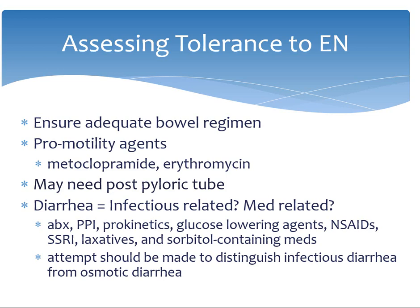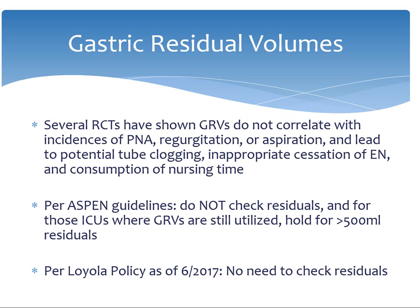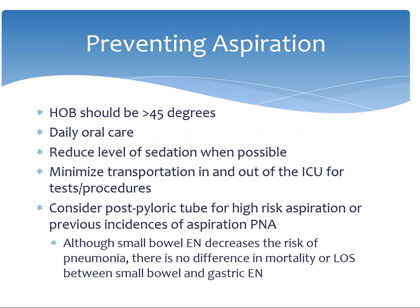Checking gastric residual volumes are no longer recommended per ASPEN guidelines and are reflected in the updated policy at Loyola. Several randomized control trials have shown that elevated gastric residual volumes have no correlation with incidences of pneumonia, regurgitation, or aspiration. Checking gastric residual volumes can lead to potential tube clogging, inappropriate cessation of enteral nutrition, and consumption of nursing time. Instead, aspiration prevention should include daily oral care, reducing the level of sedation whenever possible, ensuring the head of bed is elevated at least 30 to 45 degrees, and considering post-pyloric tube feeds for patients who are at high risk for aspiration or who have had previous incidences of aspiration pneumonia.